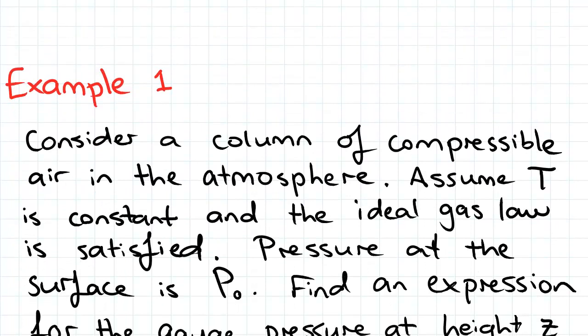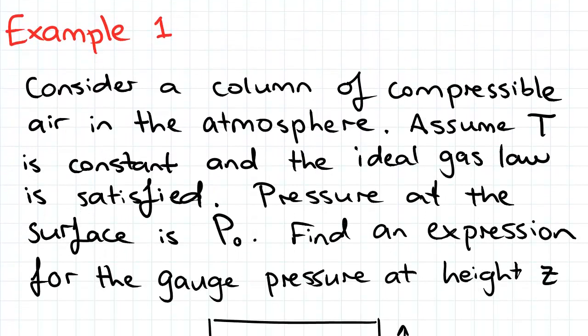In this particular example, density of the fluid that we are considering is not a constant. So we have been asked to find an expression for the gauge pressure of a column of compressible air in the atmosphere.